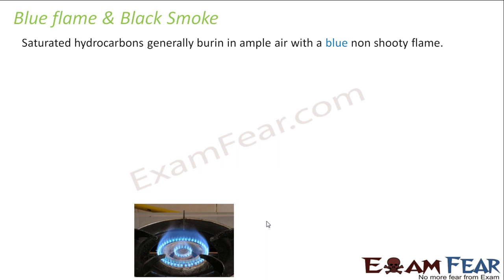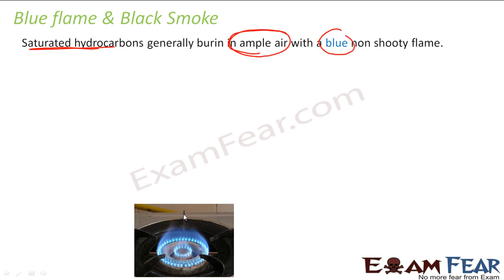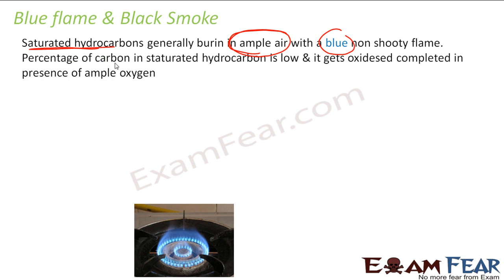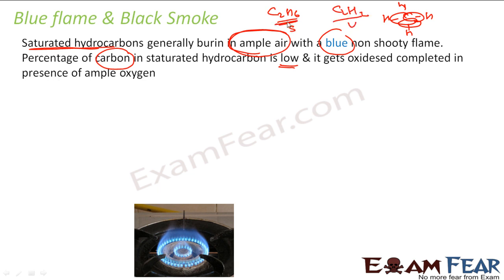When talking about Combustion, we should discuss blue flames and black smoke. In the gas stove, you see blue flames. Why? Because if you have a saturated hydrocarbon and you burn it in ample air, it gives a blue flame — everything burns properly. The percentage of carbon in a saturated hydrocarbon is low. For example, in C2H6 you have 6 hydrogen and 2 carbon, whereas in C2H2 (unsaturated), you have 2 carbon and 2 hydrogen — carbon concentration is higher. In saturated compounds, the percentage of carbon is less, so it gets oxidized completely in the presence of ample oxygen, giving a blue flame.